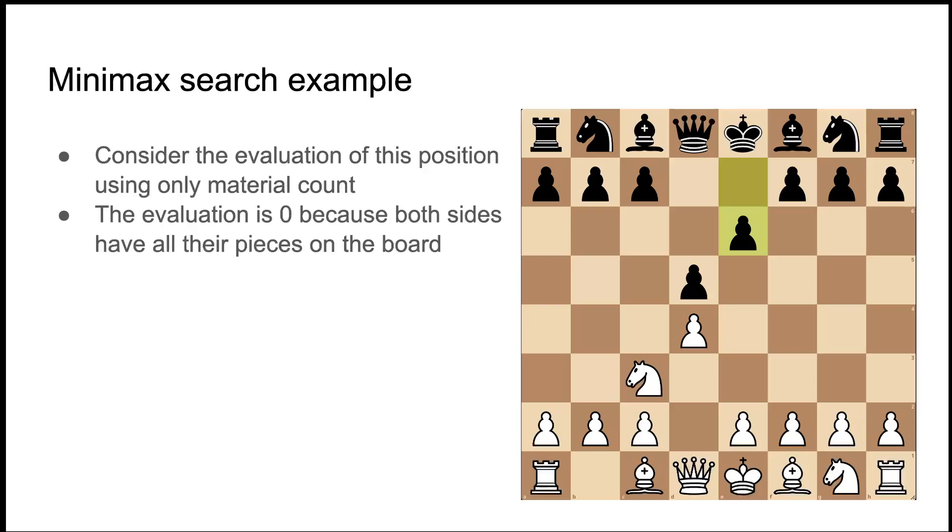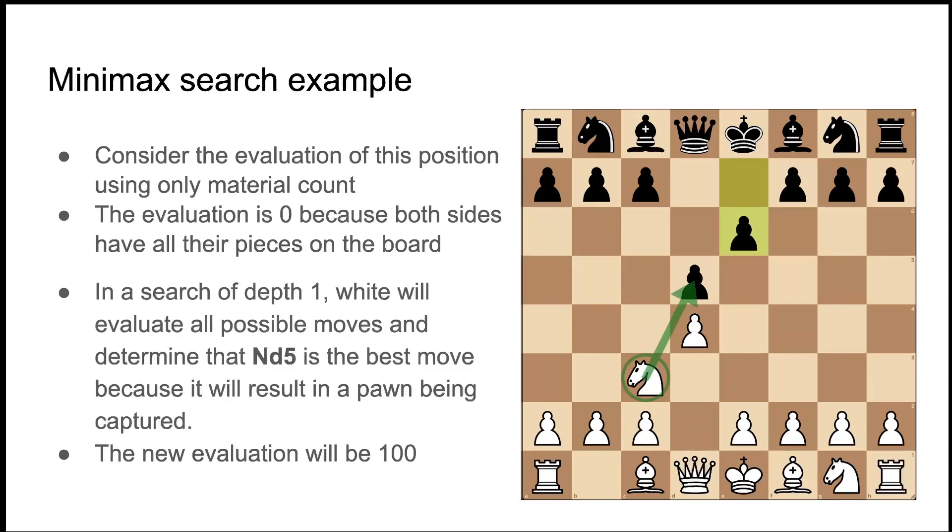Okay so I'm going to talk a little bit more about this search and I want to talk about something called Minimax and I'm going to use this example here. So consider the evaluation of this position. There's no pieces that have been captured yet so the evaluation is zero because they have all the pieces on the board. In a search of depth one, so say an engine is evaluating the position for white and it's searching forward a depth of one move, white will evaluate all the positions and realize that the only position that provides an advantage is by taking the pawn on d5, knight d5. And the new evaluation will be 100 because white has one more pawn than black.